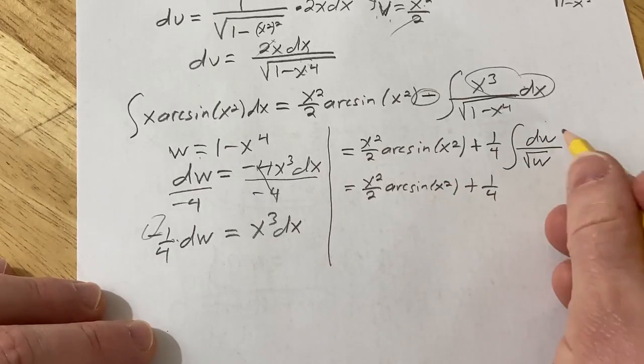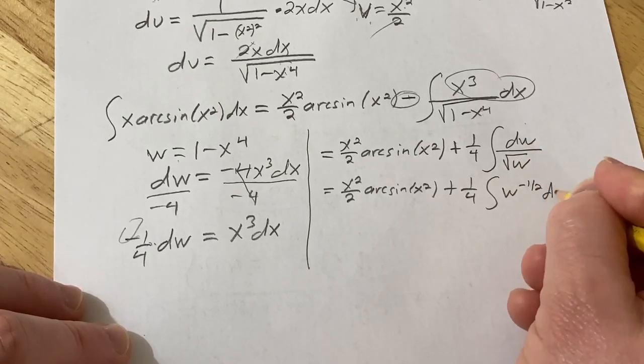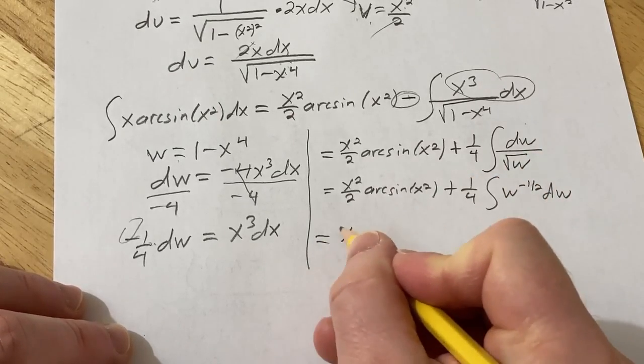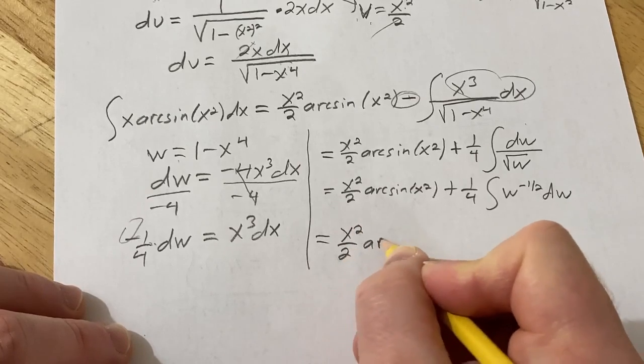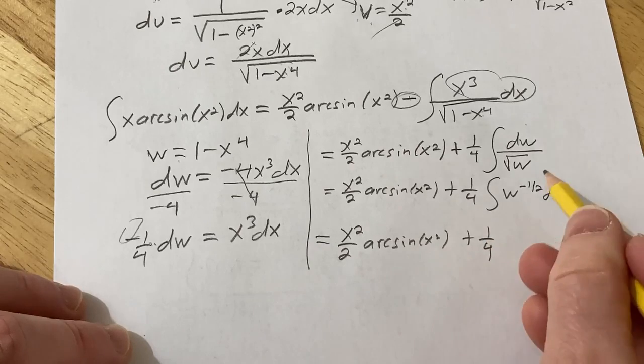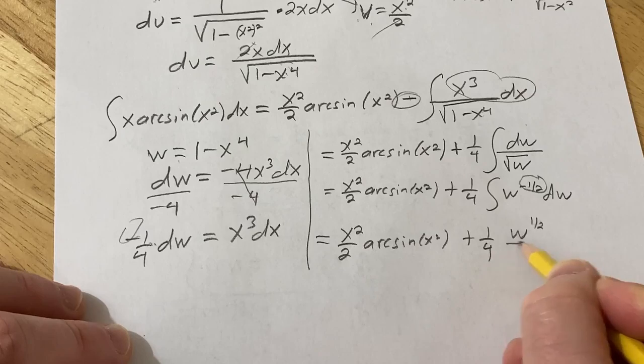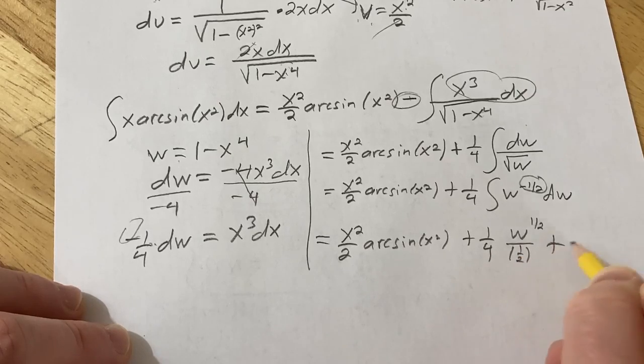So this is equal to x squared over 2, arcsin x squared. Okay, plus 1 fourth. And then write this to the 1 half power and bring it up. So your exponent becomes negative. So this is x squared over 2, arcsin x squared, plus 1 fourth. Add 1 to this, so you get w to the 1 half, divide by the result, plus C.